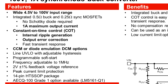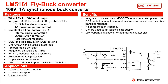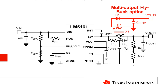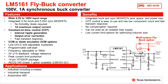The device also comes in an automotive AEC-Q100 grade 1 option. Another feature of this device is that you can replace the inductor with a transformer to create a flyback converter that can supply multiple isolated outputs without using an optocoupler or an auxiliary winding for the feedback.